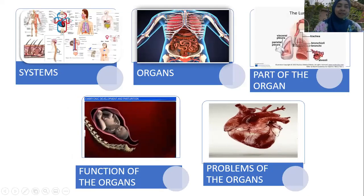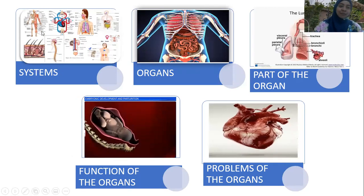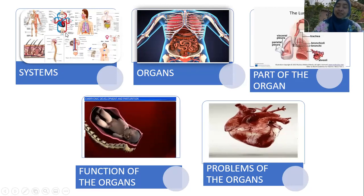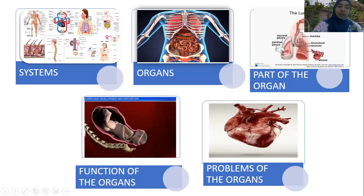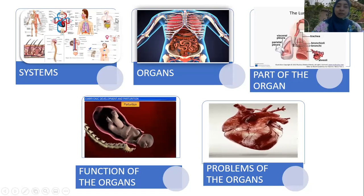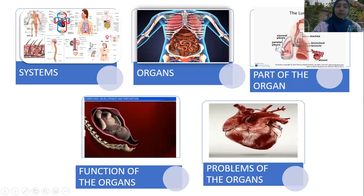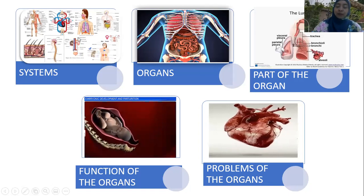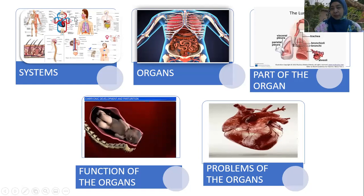We have so many systems in our body. We have the musculoskeletal system, the cardiovascular or hematology system, the respiratory system, the digestive system, the endocrinology system, the urinary system, the neurology system, and the integumentary system.